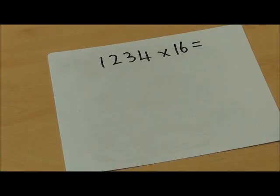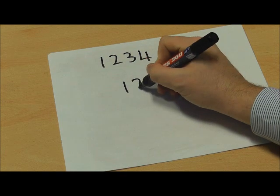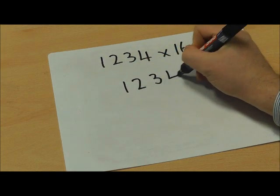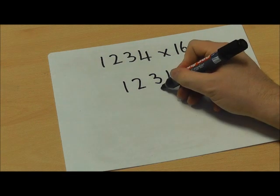We're now going to look at how we can use long multiplication to solve multiplication questions with larger numbers. I'm going to write in my larger number, which is 1234, and then use place value to line up my 16 underneath.